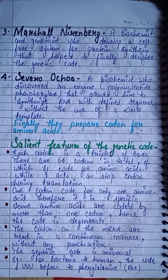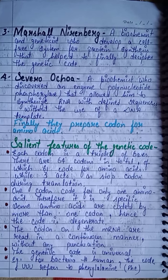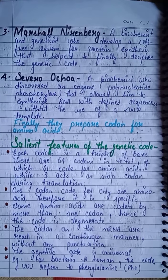After that, there was another biochemist who discovered an enzyme called polynucleotide phosphorylase. This enzyme allowed synthesis of RNA molecules with a defined sequence without the use of a DNA template. Using these approaches, scientists finally prepared codons for all 20 amino acids — what we call the genetic code.